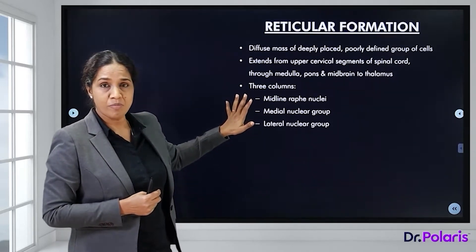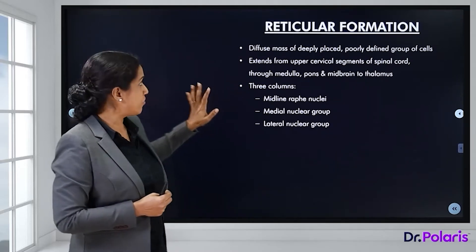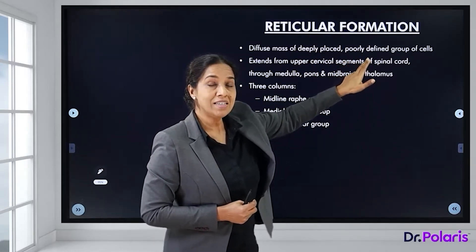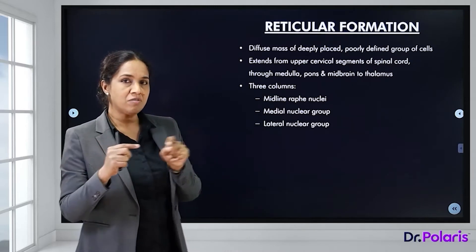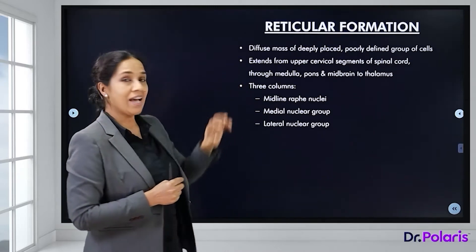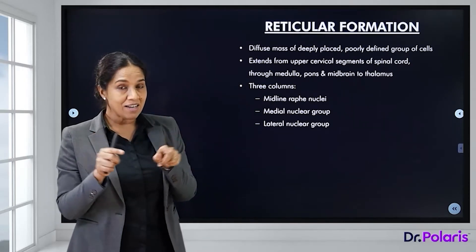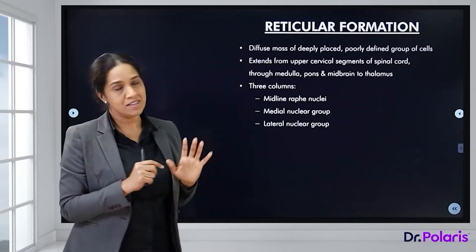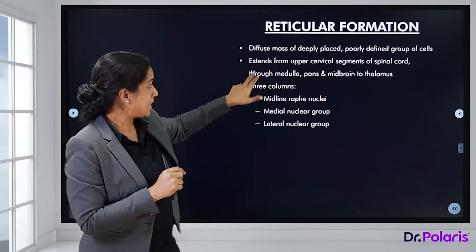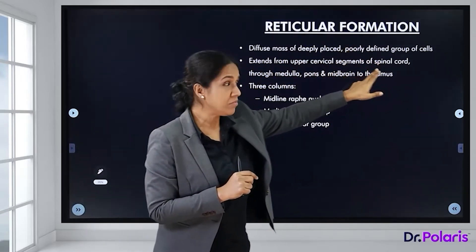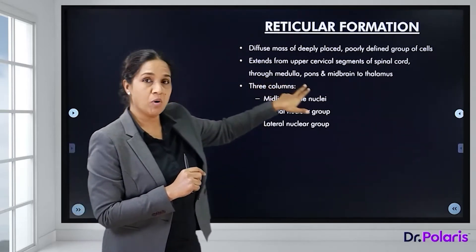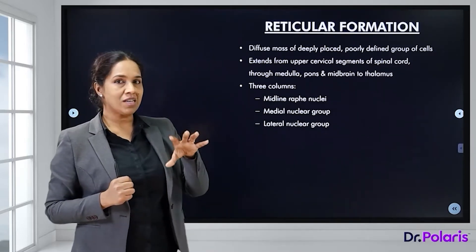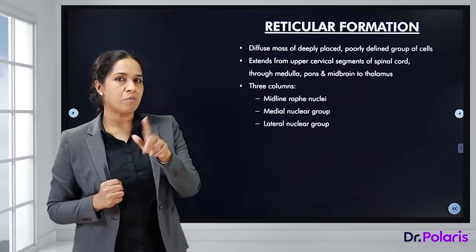The reticular formation has a modulatory function. It is basically a diffuse mass of deeply placed and poorly defined group of cells. Since the areas are not well defined, you can call it a diffuse mass of deeply placed cells.